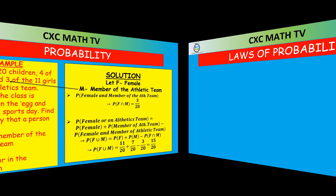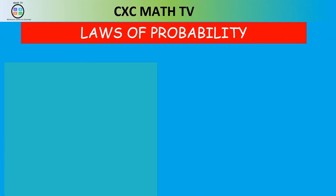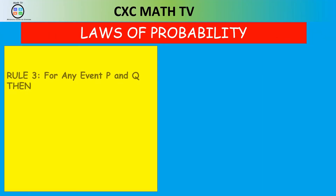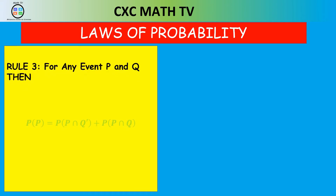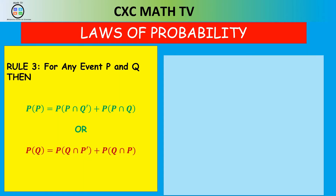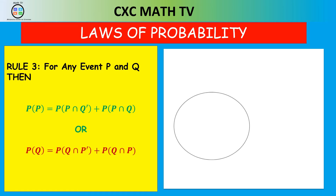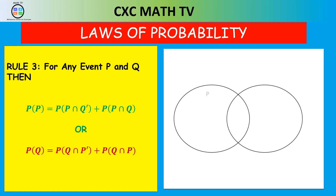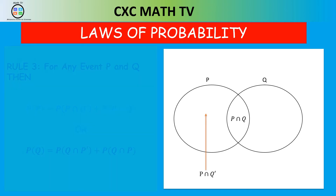Rule three states: for any events P and Q, the probability of P equals the probability of P intersect Q prime plus the probability of P intersect Q. Likewise, the probability of Q equals the probability of Q intersect P prime plus the probability of Q intersect P. This formula is very helpful.